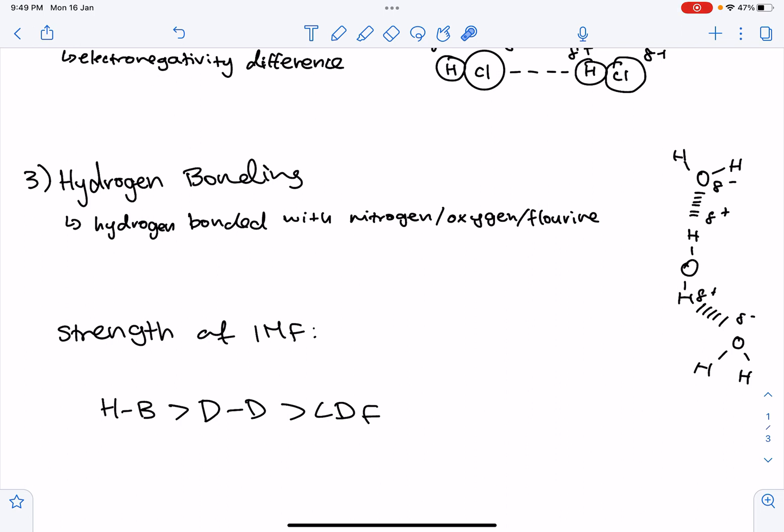It is often described as a stronger type of a dipole-dipole attraction. So hydrogen bonding occurs between the lone pairs of electrons on the oxygen in water and the hydrogen atom on a nearby water molecule, as you can see here.